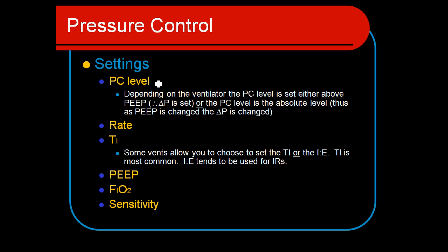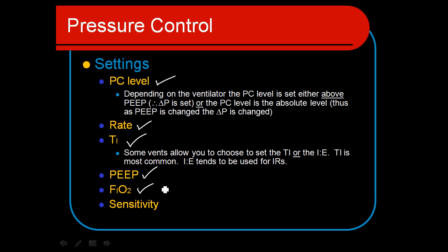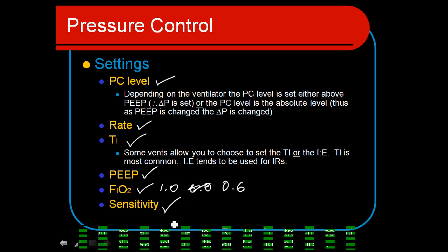Our settings include the pressure control limit, respiratory rate, and TI. Unlike volume ventilation, setting TI is not optional — we must specifically determine how long the pressure control level will be held in the patient's lungs. We always set a PEEP and an FiO2, which may be as high as 100% if we're uncertain about the patient's oxygenation status, or perhaps around 0.6 if we believe the patient is fairly well oxygenated. Sensitivity is always set appropriately for the patient.